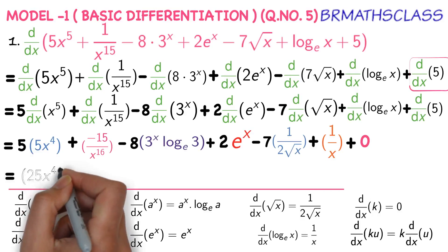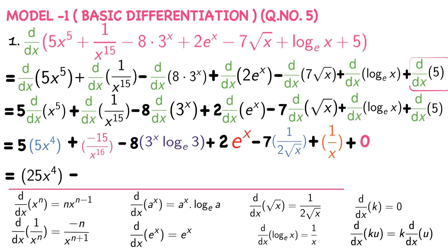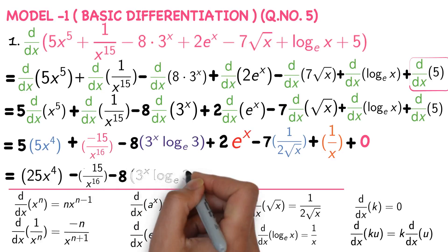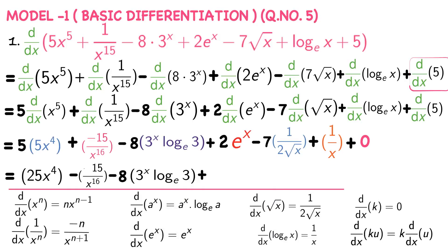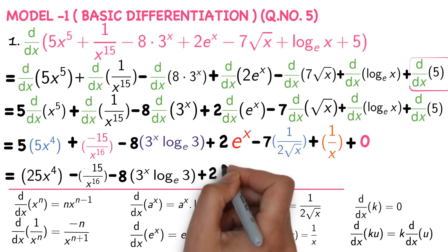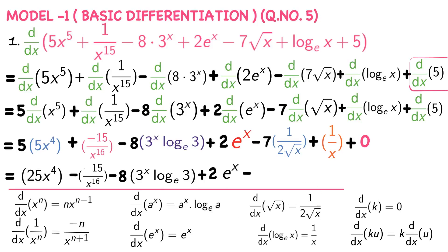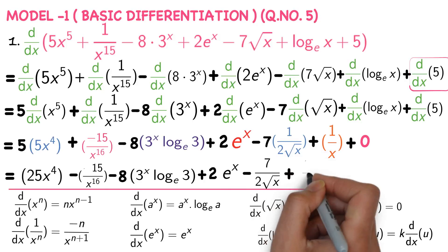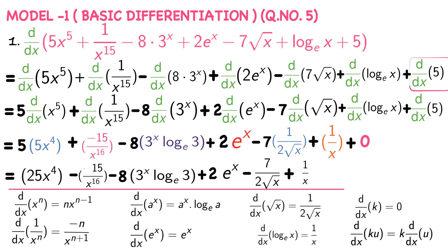Derivation is completed. Simplifying: 5 into 5 is 25, so 25 x power 4, minus 15 divided by x power 16, minus 8 into 3 power x into log 3 base e, plus 2 into e power x, minus 7 divided by 2 root x, plus 1 by x. My main intention in this problem was that you must know how to apply the formula d by dx of ku and revise all derivatives of algebraic expressions.